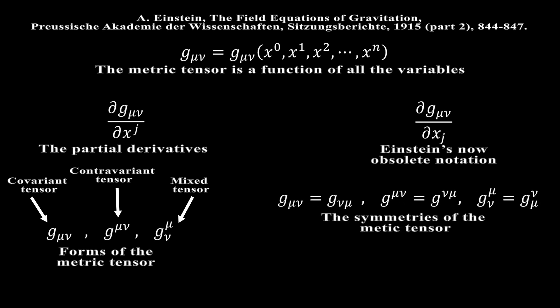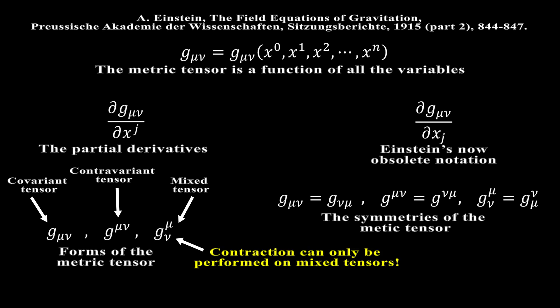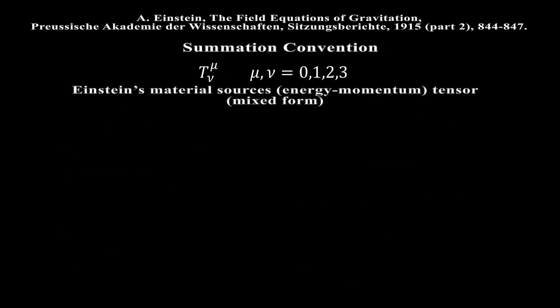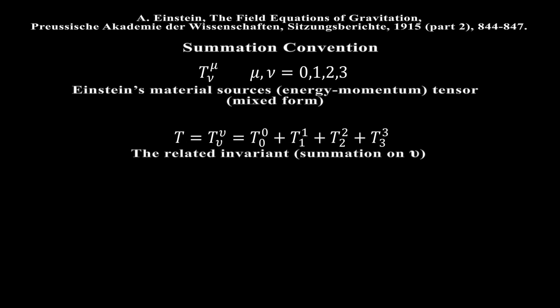The metric tensor is symmetric in u and v. Now, there is an operation on tensors that we will need. It's called contraction, and it can only be performed on mixed tensors because it involves setting one of the subscripts equal to one of the superscripts. Contraction reduces the order of the tensor by 2. In our case, contraction reduces the tensor involved to order 0. A tensor of order 0 is called an invariant. Next in our preliminary mathematical issues is the summation convention. Consider, for instance, Einstein's tensor for the material sources of his gravitational field in its mixed form. Setting u equals v in this expression, we get the invariant t in this way, where I have summed on the suffix v. The rule is that there is summation on a suffix that occurs both as a superscript and a subscript. This is called the summation convention. In this case, v has four values because Einstein's theory involves his four-dimensional space-time continuum.